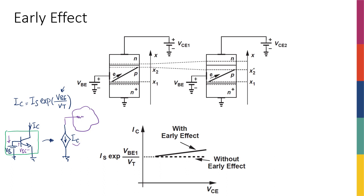A current source is a two-terminal element whose current is not dependent on anything you connect to it. It's always going to have a constant current in the branch, dependent on something internal within the current source. That internal thing could be just a number, like an independent current source, or dependent on something else — but not dependent on what you connect to it. Well, it turns out that's not really the full story.